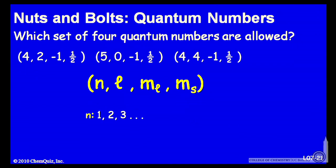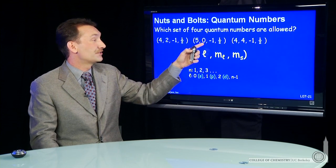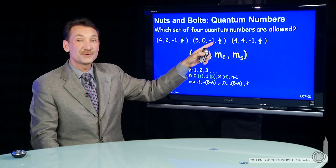Let's look at the next one. We have 5, 0, minus 1, and 1 half. We have n equal 5, l equals 0. Those are both fine. But for m sub l, we have minus 1.